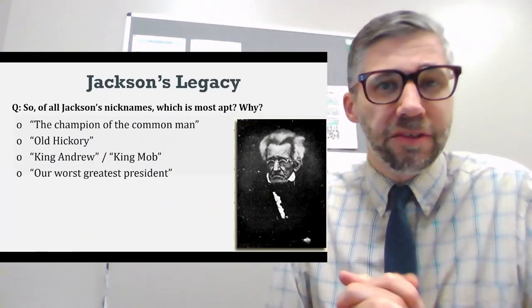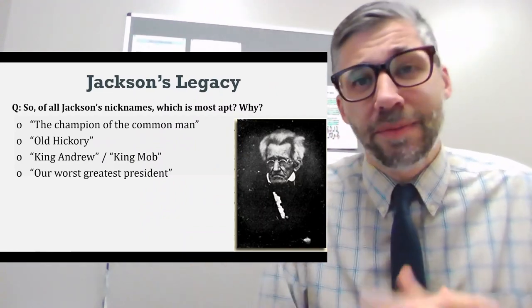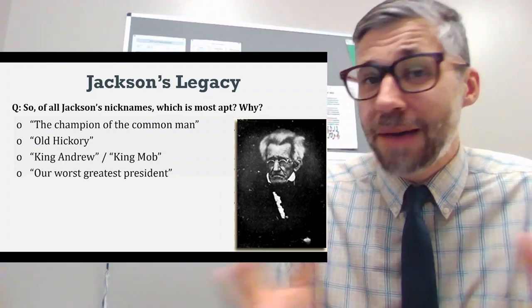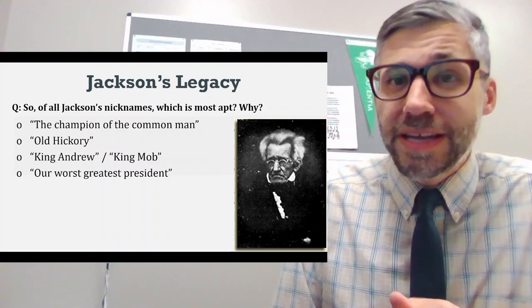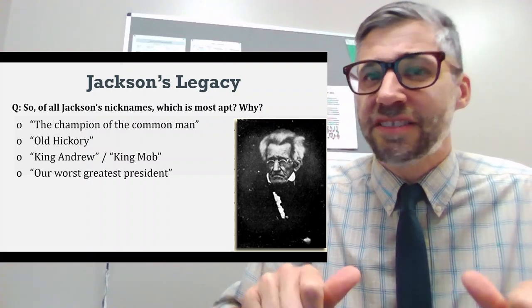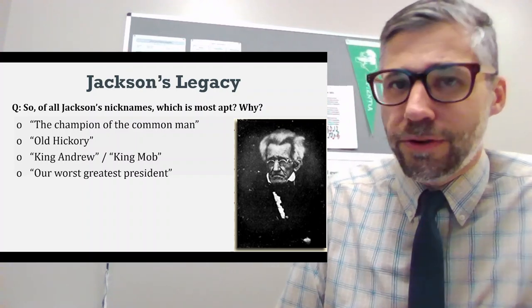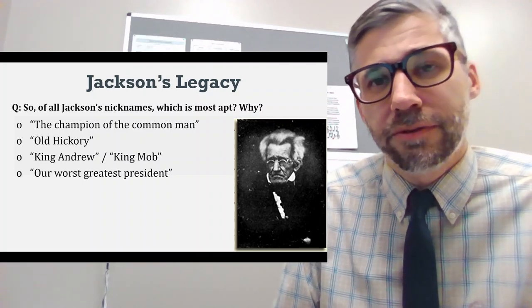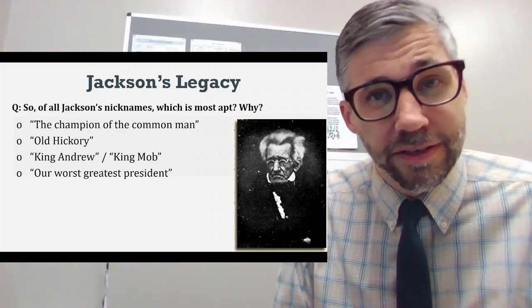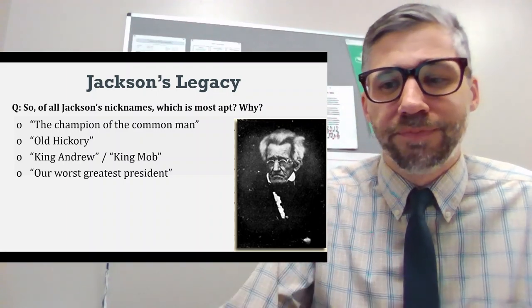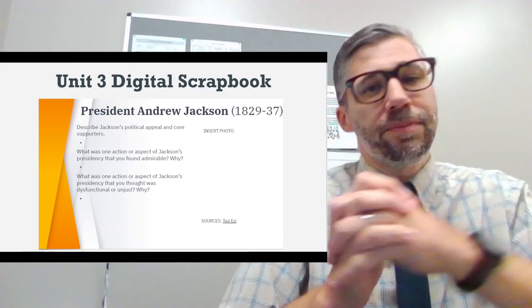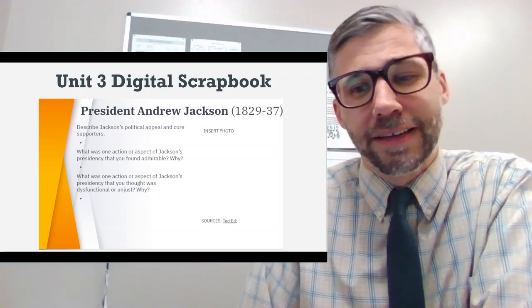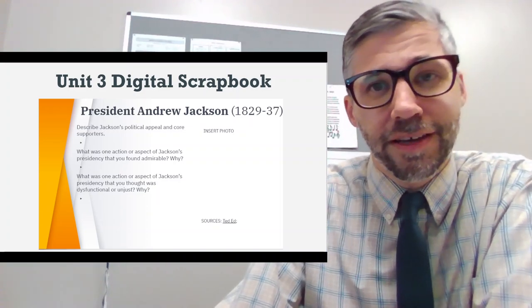In the end, we have this complex picture of a president. Jackson is known by many names — I want to ask you students: which of these nicknames seems most appropriate? The champion of the common man? Old Hickory, as soldiers called him — hickory being a kind of stout wood that doesn't bend? King Andrew, or King Mob — not a compliment? Or our worst-greatest president? Which strikes you as most appropriate? As you're finishing and reflecting, I want to point you toward the optional Digital 3 scrapbook — that'll help you put your thoughts together and get some points in the exams category. Thanks for paying attention, and I'll see you next time.